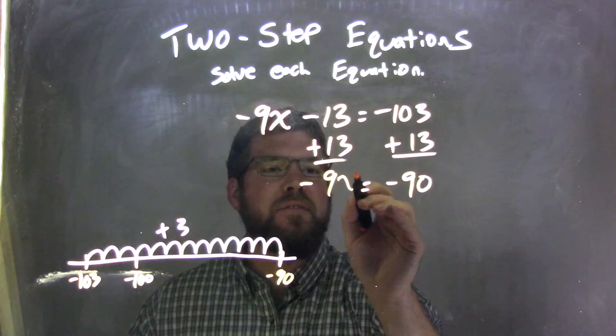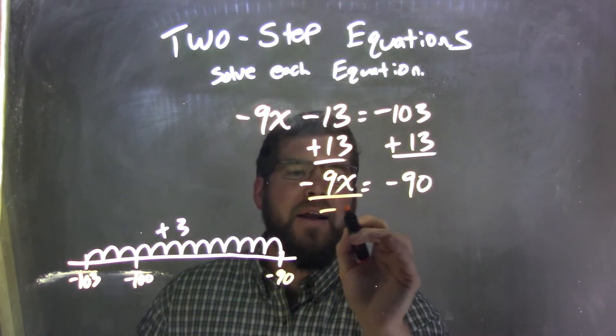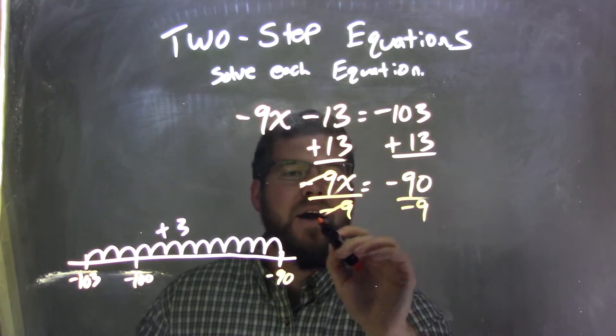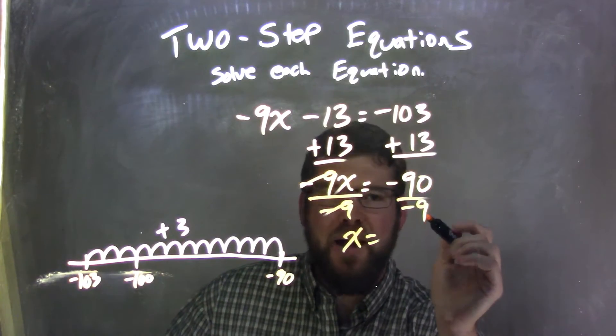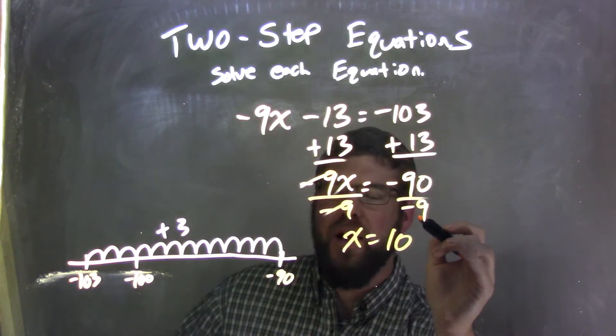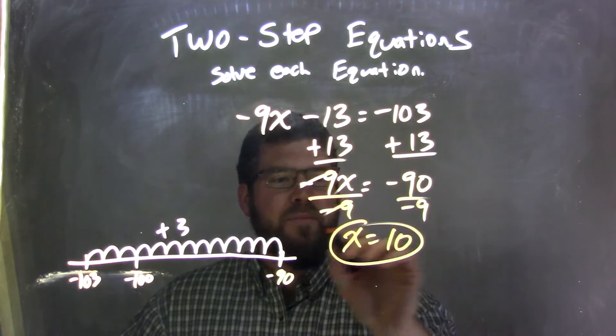So now I have negative 9x equals negative 90. Okay, we divide by negative 9 to both sides because that's the opposite of the multiplication. Negative 9s cancel, we're left with x equals... well, negative 90 divided by negative 9 is a positive 10. A negative divided by a negative is a positive, and 9 goes into 90 ten times. So x equals 10 is my final answer.